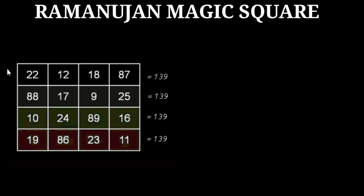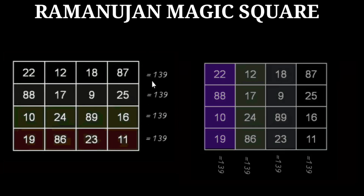Now we will discuss more interesting patterns in this magic square. If you add all the numbers in a given row, you will get the same number — that is 139. If we add the numbers in the first row you get 139, and again 139 if we add the numbers in the second row, third row, and the fourth row — you always get 139.